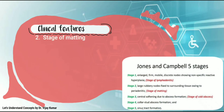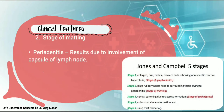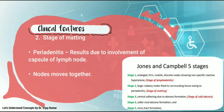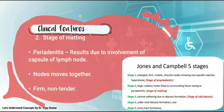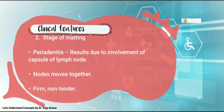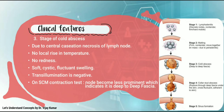Second stage: matting. Periadenitis results due to involvement of the capsule of the lymph node. Nodes move together and are firm and non-tender.